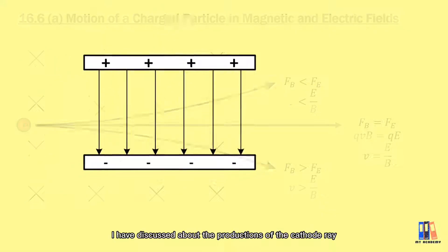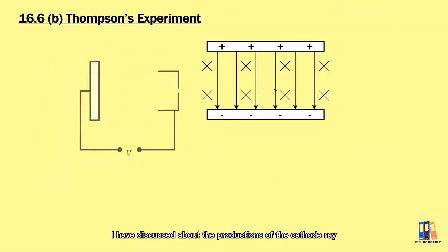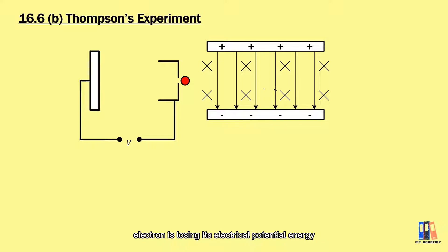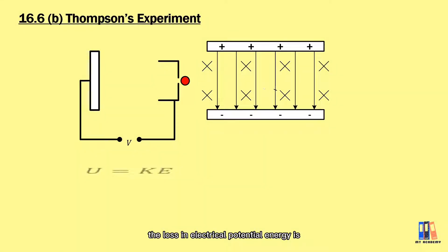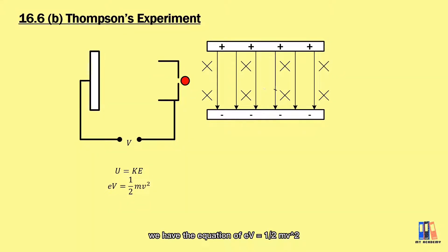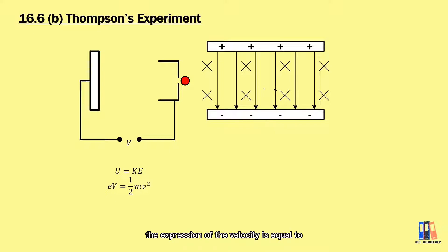In chapter 12, I discussed the production of the cathode ray. From that discussion, when the electron moves from the cathode to the anode, the electron loses its electrical potential energy while gaining kinetic energy. Based on conservation of energy, the loss in electrical potential energy is converted to kinetic energy. Substituting the formulas for potential and kinetic energy, we have eV equal to half mv squared, and from here we obtain the expression for velocity: v equals the square root of 2eV divided by m.